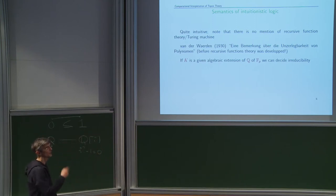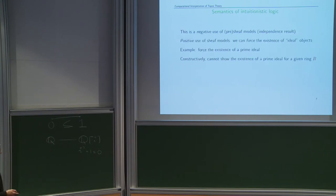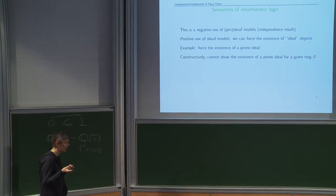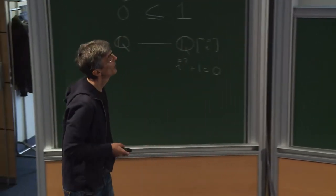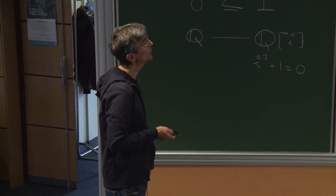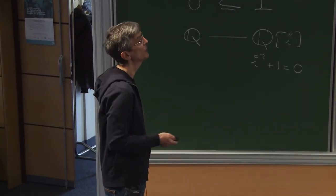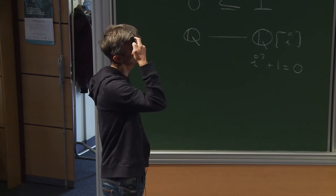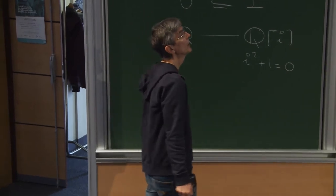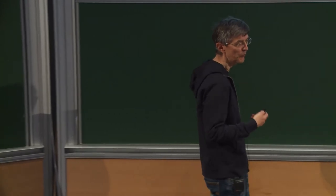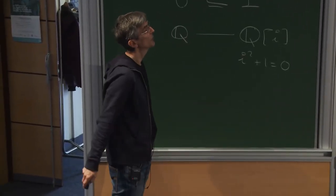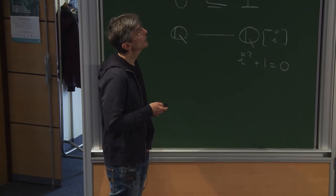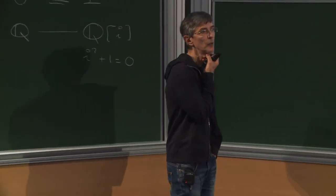If you have a given algebraic extension of Q or F_p, then there are algorithms to decide irreducibility. But in general, for an arbitrary field, there is no such algorithm. This is a negative use of sheaf models — independence results. This is the essence of Cohen's independence results; it was more complicated, but this is the essence of use of sheaf models.